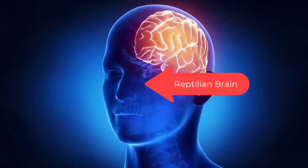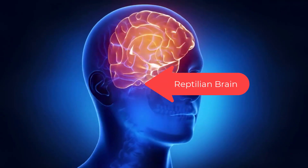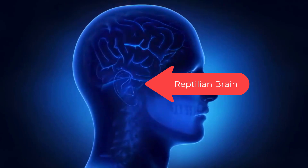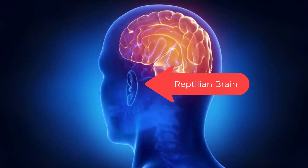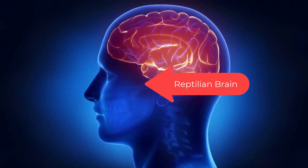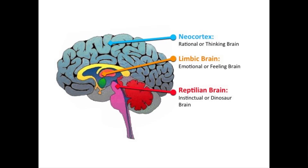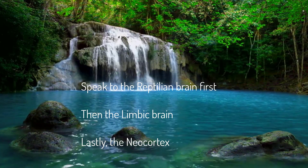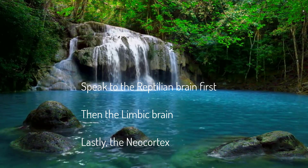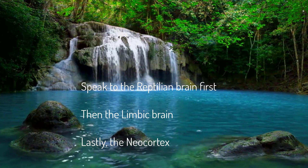The old brain — the reptilian brain — it decides. It can take into account input from the other brains, but it can also decide faster than the blink of an eye, then use the other brains to justify the decision. The reptilian brain is visual and hardwired into the brain stem. It can make survival decisions before you or the other brains can even begin to process the data.